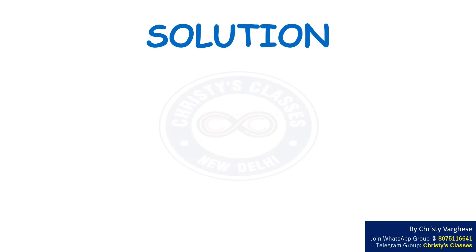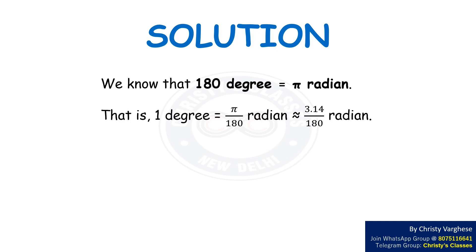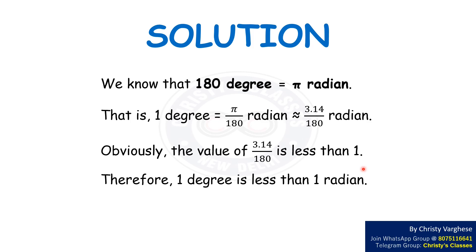Solution: We know that 180 degrees equals pi radians. That is, 1 degree equals pi by 180 radians, which is approximately equal to 3.14 by 180 radians. Obviously, the value of 3.14 divided by 180 is less than 1. Therefore, 1 degree is less than 1 radian. Hence, we can write d is less than r. Let us be inequality 1.